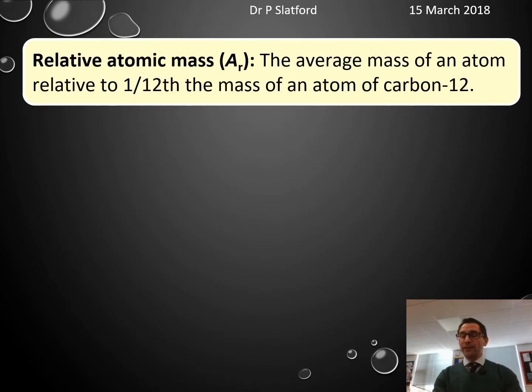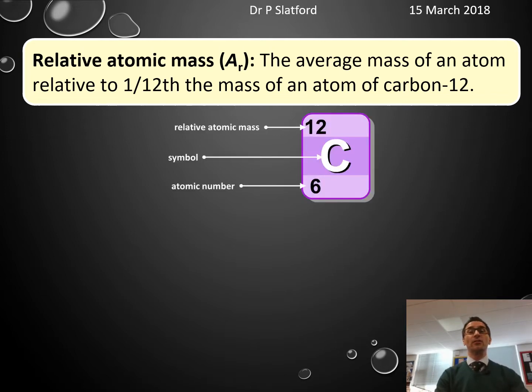A quick reminder: relative atomic mass (Ar) is the average mass of an atom relative to 1/12th the mass of an atom of carbon-12. What does that mean in practice? It means we're going to look things up on the periodic table, specifically the larger numbers which are the relative atomic masses.